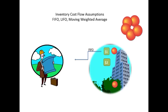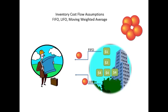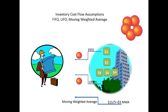FIFO assumes the first unit cost in of $1 was the first unit cost to be expensed out at $1. LIFO assumes the last unit cost in of $4 was the first unit cost to be expensed out at $4. Moving Weighted Average doesn't assume which unit cost went out first, and simply expenses an average unit cost — computed as $15 total cost of inventory on hand just before the sale, divided by 5 units on hand, which equals a $3 moving weighted average cost per unit.